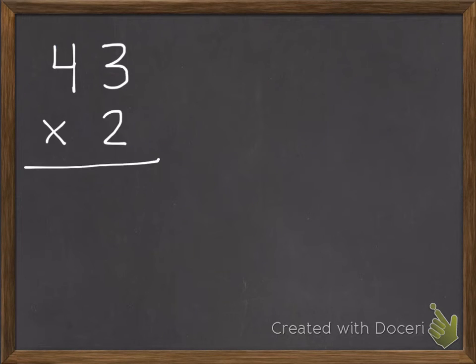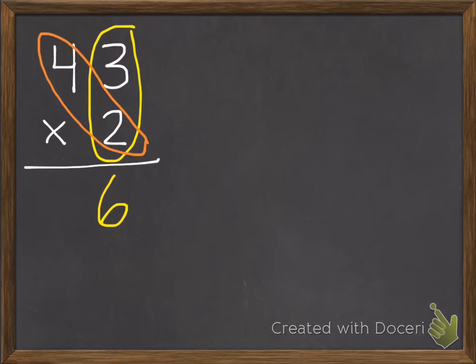Here's another example. So if I have 43 times 2, I can multiply the ones. 3 times 2, which equals 6. And I can multiply 2 times 4 tens. 2 times 4 tens is 8 tens. So I put 8 in my 10 spot. And I get 86.